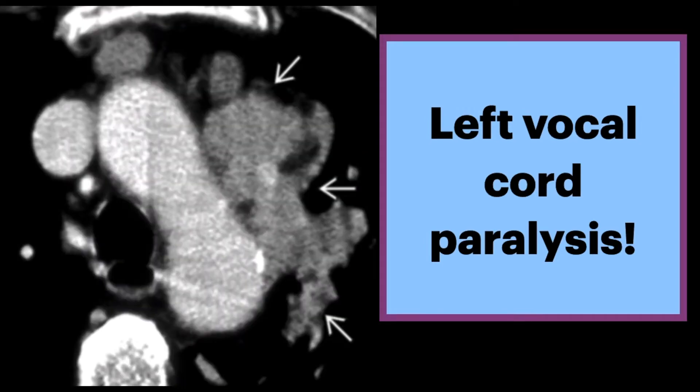In this same patient, axial CT at the level of the aortic arch shows a large mediastinal mass involving the left recurrent laryngeal nerve, as it courses under the aortic arch.